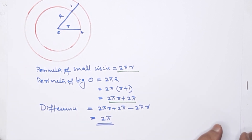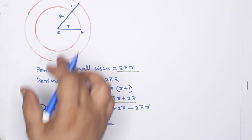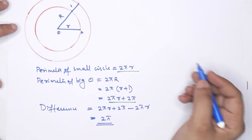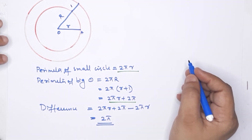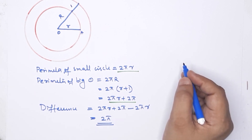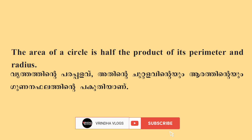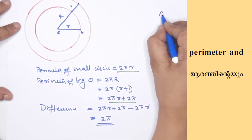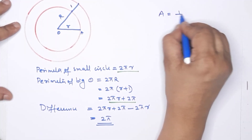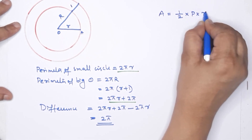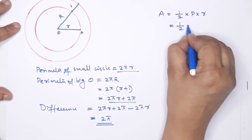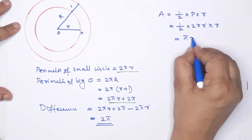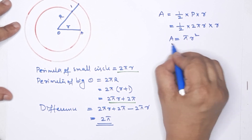Now let's move to the next topic: Area. There are different shapes involving a circle, and we find the area of a related circle. The main point is that the area of a circle is half the product of its perimeter and radius. That is: half × perimeter × radius, and 2 and 2 cancel to give πr².